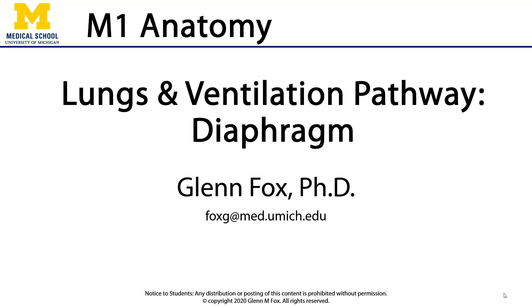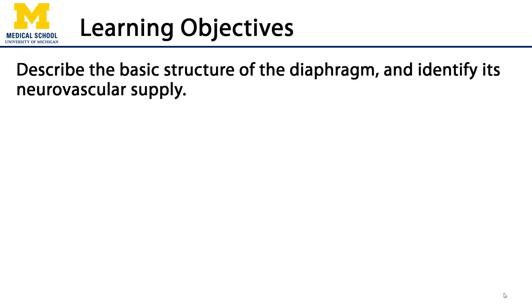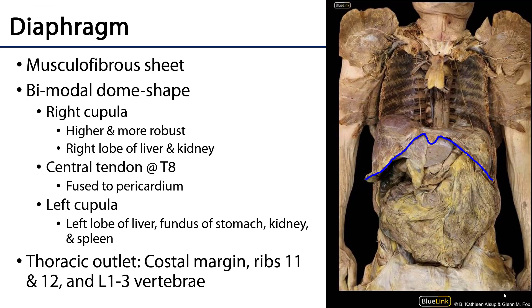Let's talk about the diaphragm. In this video I'll describe the basic structure of the diaphragm and identify its neurovascular supply. The diaphragm is a musculofibrous sheet that separates the thoracic cavity from the abdominal pelvic cavity.